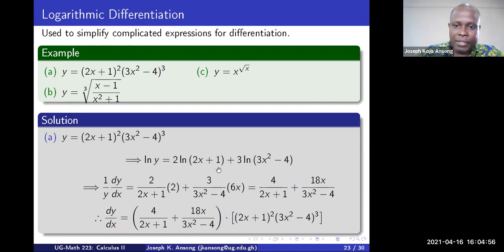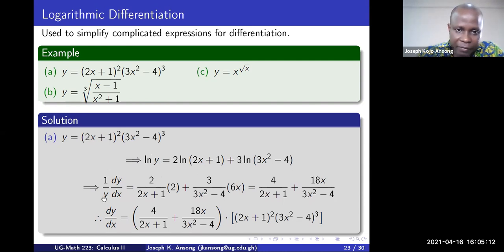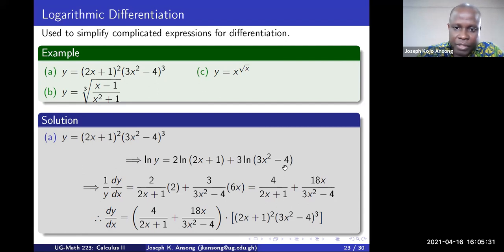Now that it is in this form, it is much easier to differentiate. Note that y is a function of x, so we have to keep that in mind. To differentiate with respect to x, I take (1/y)·(dy/dx). Differentiating the right side: you get 2 divided by (2x+1) times the derivative of (2x+1), which is 2, plus 3 divided by (3x²−4) times the derivative of that, which is 6x.